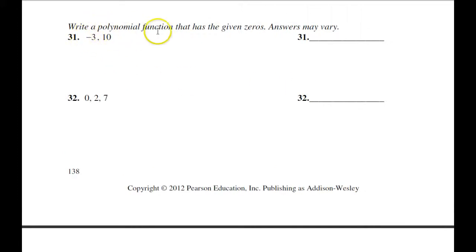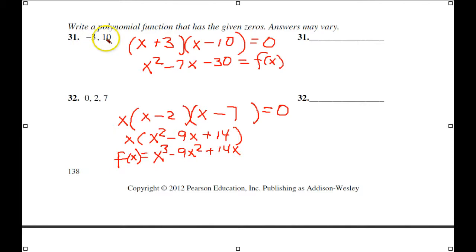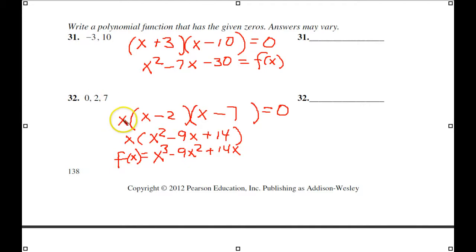Now they want us to write a polynomial function that has given zeros. Here we're doing the reverse process. These are our answers, so we put two sets of parentheses and use the opposite signs — because that's how it works going backwards — then FOIL to get our trinomial equal to zero as a function. For the next one: x equals 0 gives a factor of x; opposite sign of 2 gives (x−2); opposite sign of 7 gives (x−7). Multiply those by FOIL, then distribute the x, and there's your final answer.